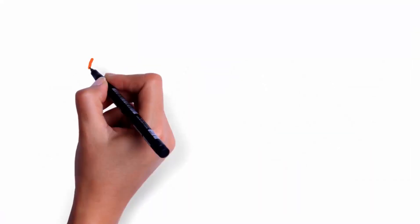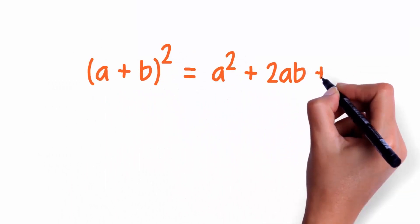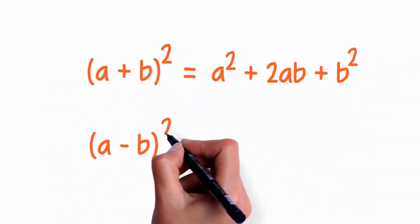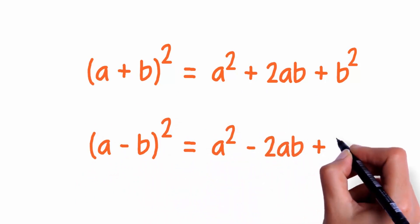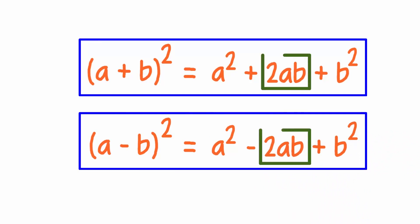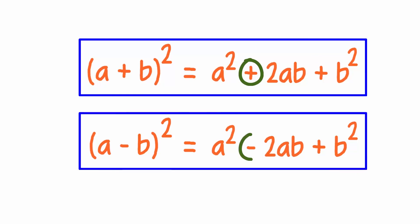First, (a + b)² equals a² + 2ab + b². And second, (a - b)² equals a² - 2ab + b². In both cases, we have 2 times a times b as the middle term. The only difference is the sign of the middle term — here it's positive and here it's negative.